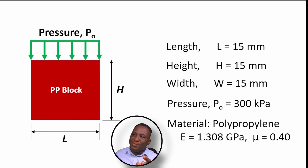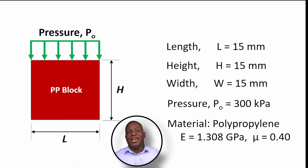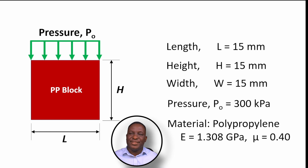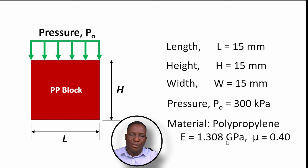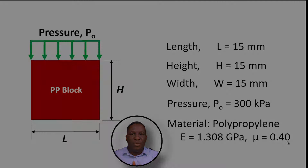We're going to run the simulation purely in the elastic regime because bulk modulus is an elastic response property. The material we're studying is polypropylene with a Young's modulus of 1.308 gigapascals and a Poisson ratio of 0.4.